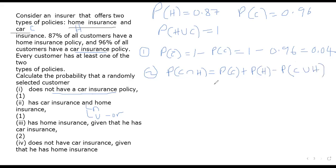So P(C∩H) = 0.96 + 0.87 minus 1, which gives us 0.83.